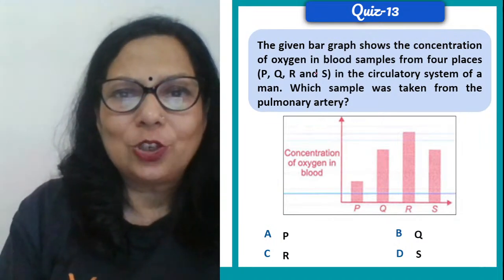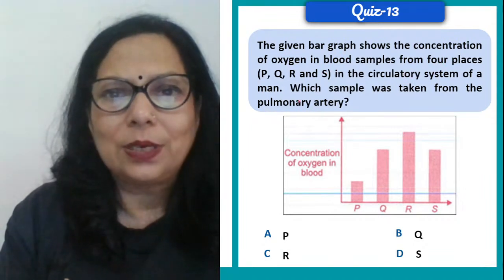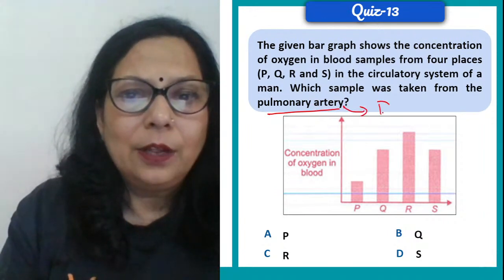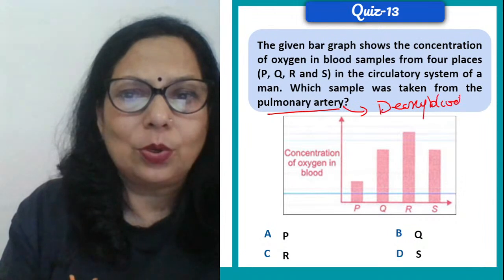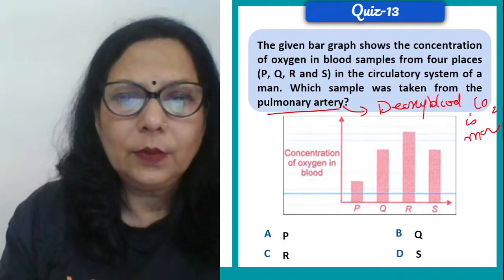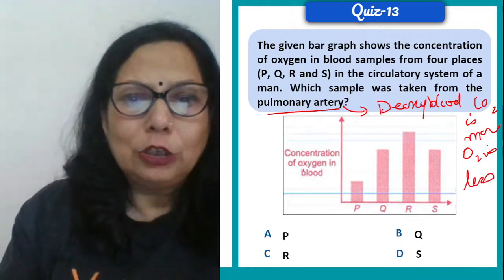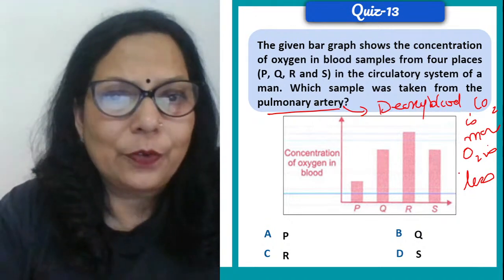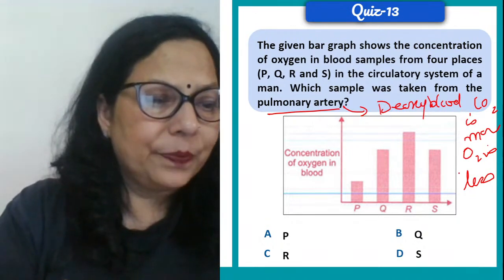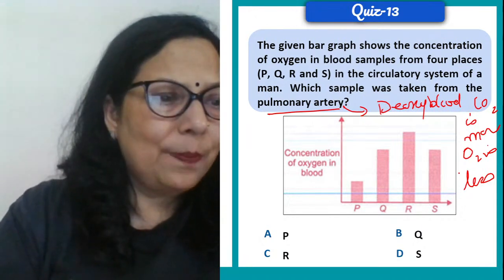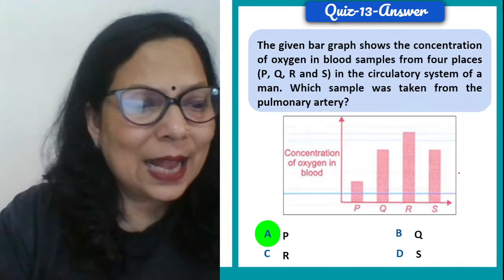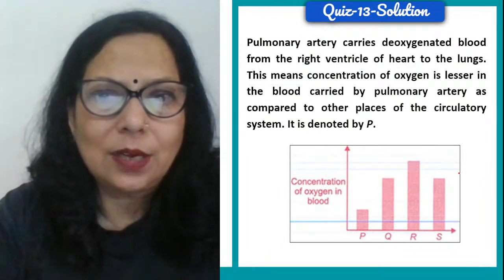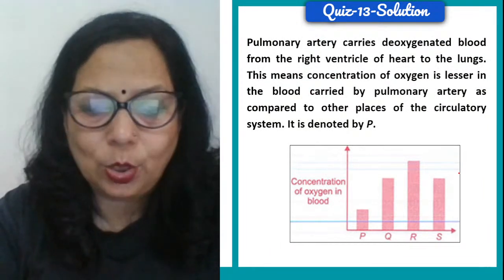The given bar graph shows the concentration of oxygen in blood samples from 4 places — P, Q, R, S — in the circulatory system of a man. Which sample was taken from the pulmonary artery? Pulmonary artery carries deoxygenated blood, so CO2 is more and O2 is less. Answer is P — the sample with the least oxygen. Pulmonary artery carries deoxygenated blood.